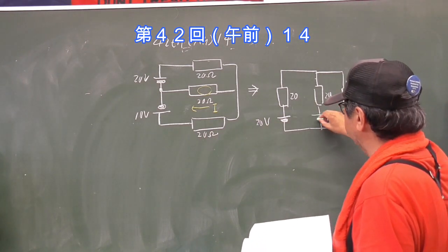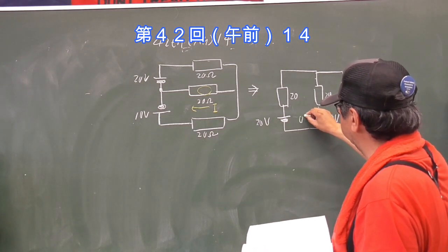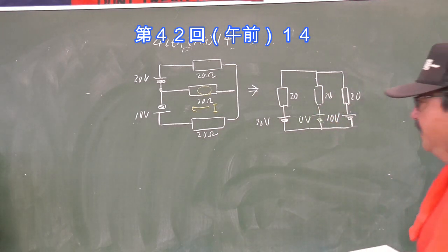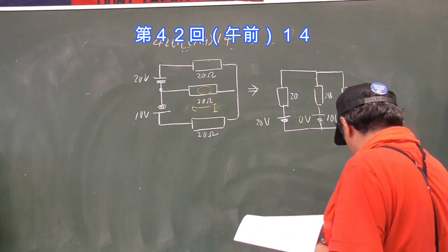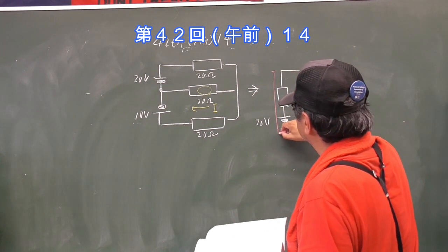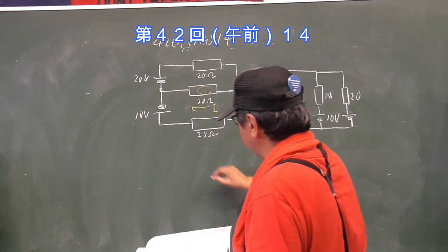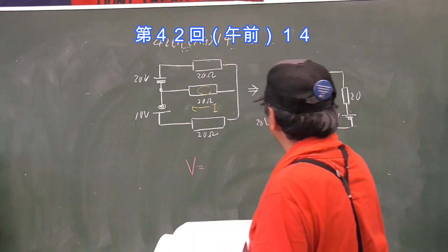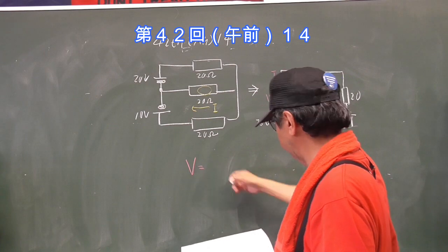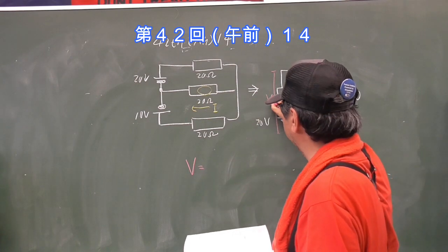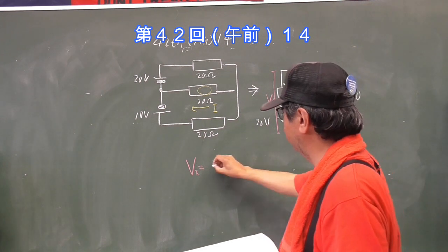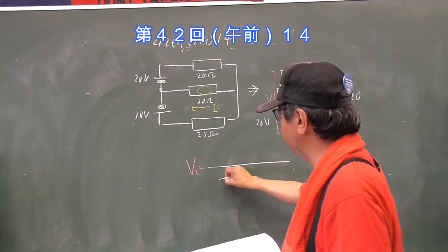ここにも電池があって20V、10Vです。20Ω。眺めてみると、ここ電池がないやと思いますけれど、ここで1つだけ知恵を出してください。この電池は0Vだとね。こういう風に考えればそのままミルマンの定理が使えます。